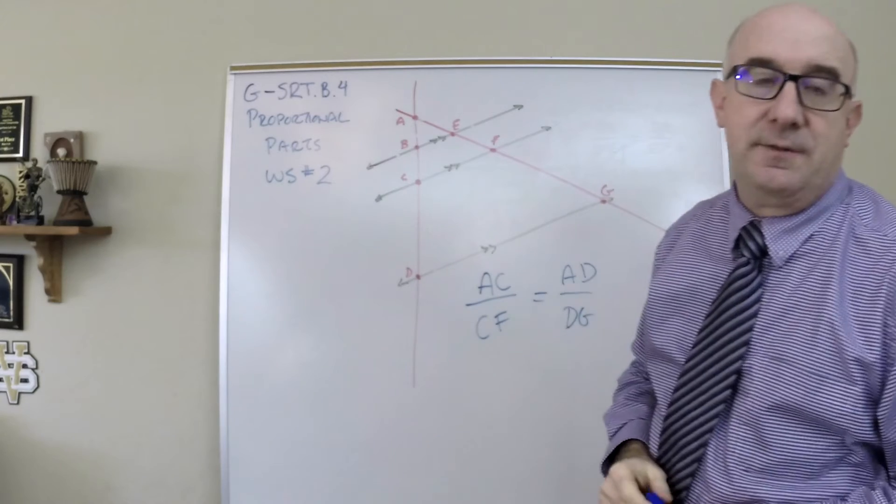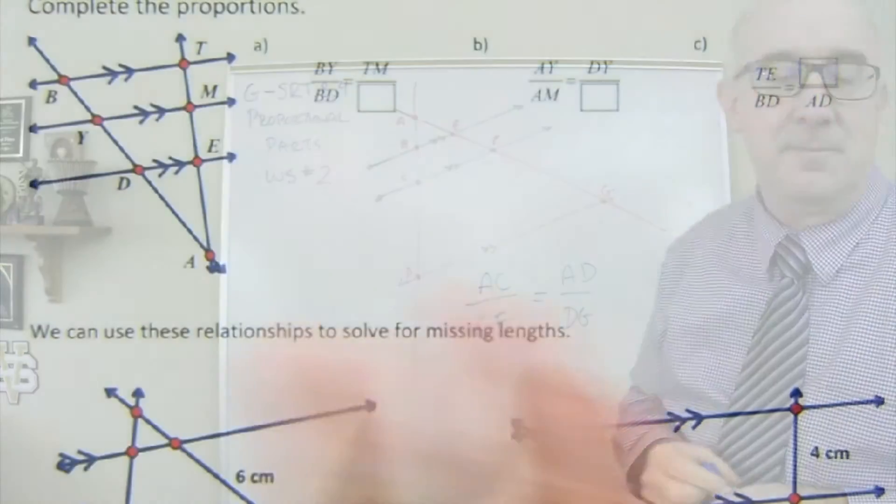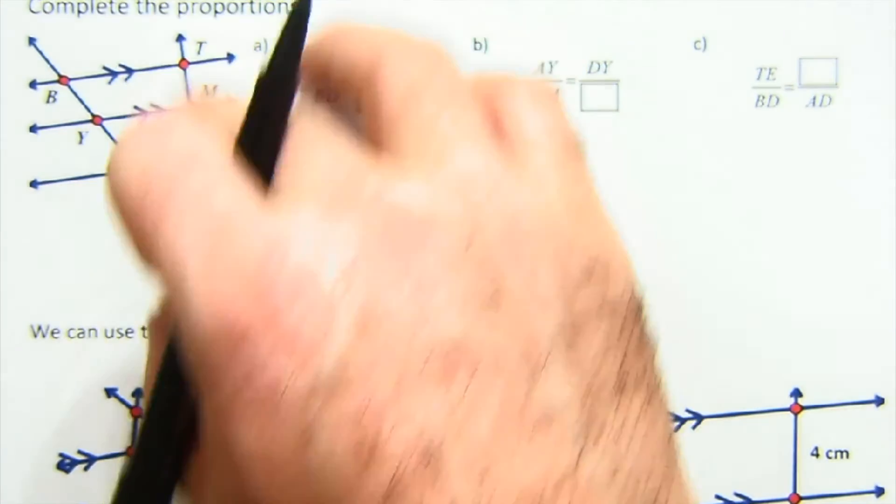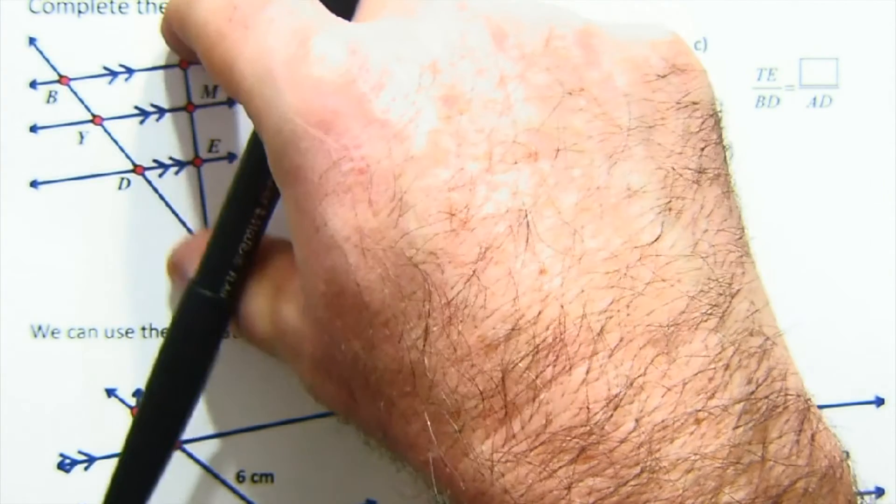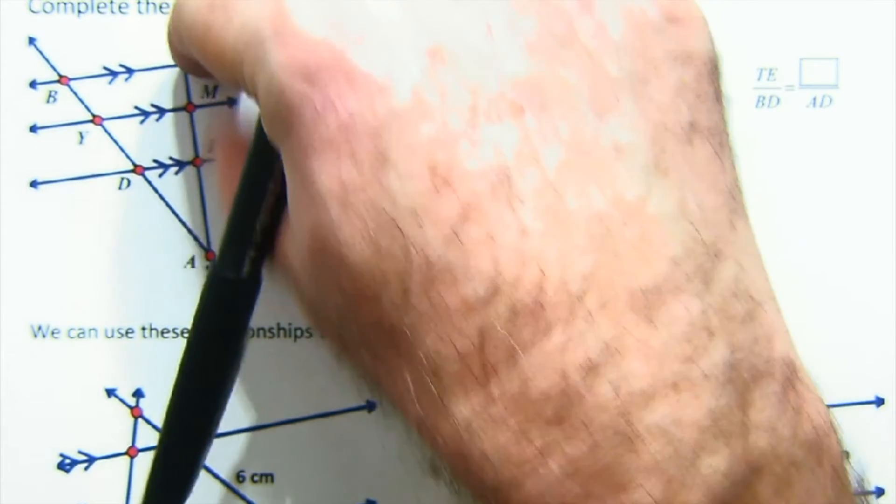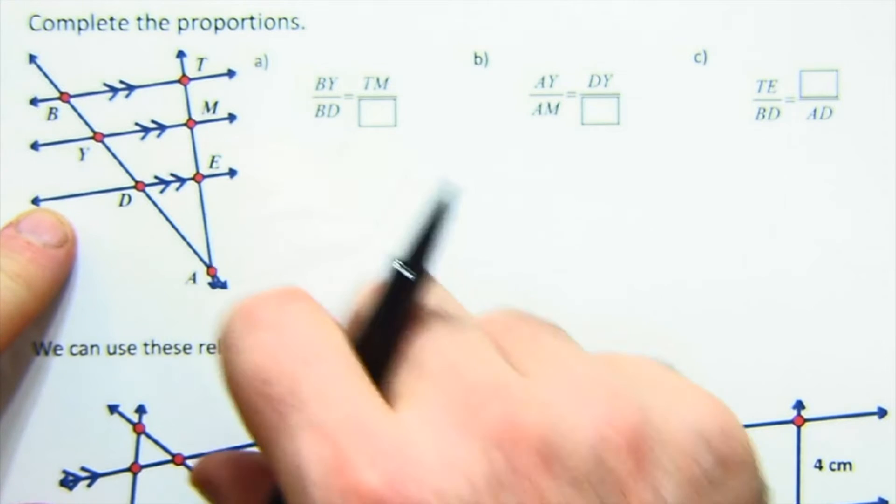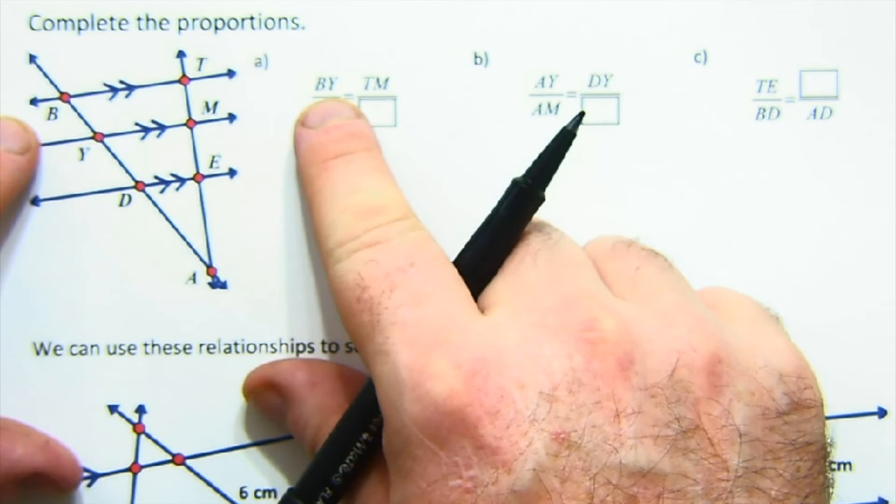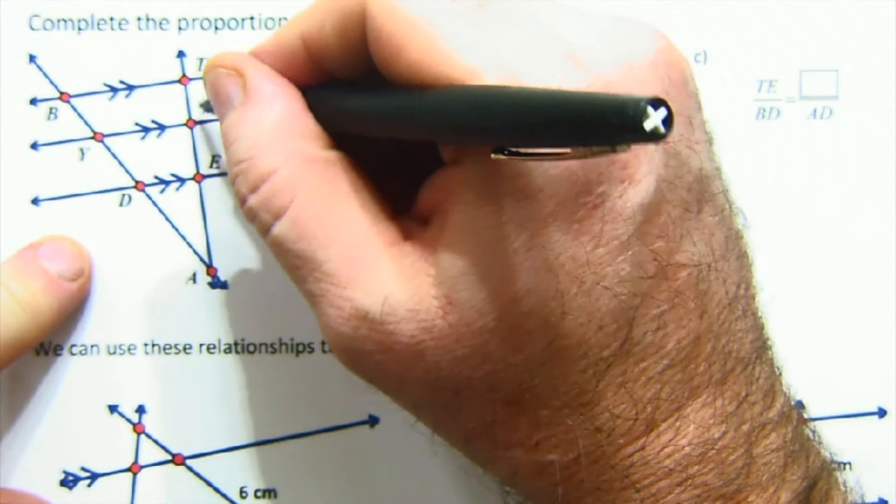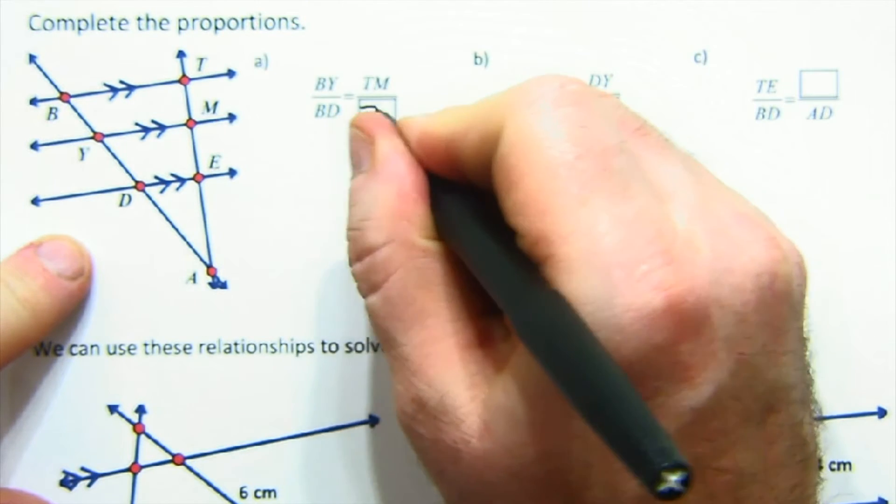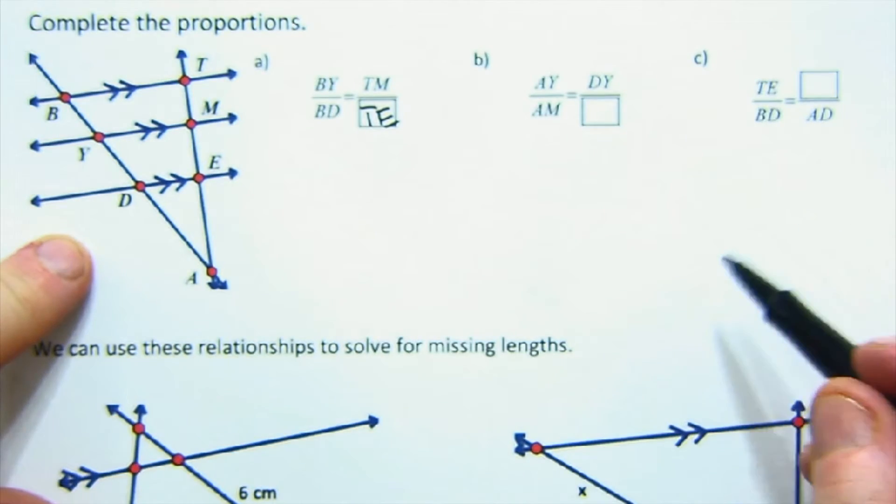Let's take a look at some examples. Once we know things are parallel, we get those proportional cuts, and we can talk about the different pieces that are cut up and their proportions. This is always fun for me. I like to lay these out and do a bunch of different proportions. Let's just look at some. BY to BD.